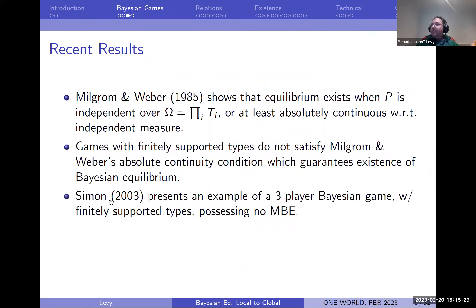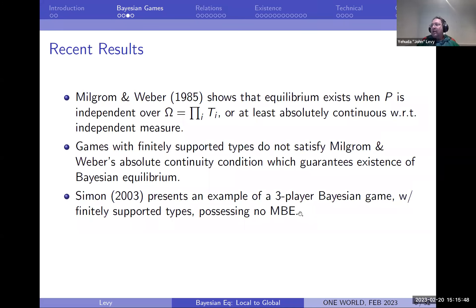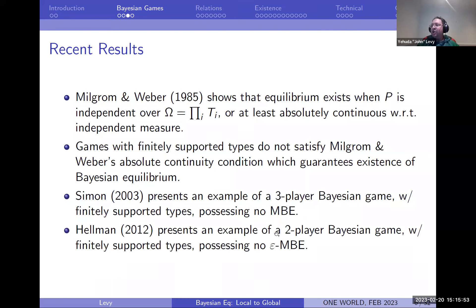Bob Simon has a three-player game with types that are finitely supported — each type has support two, so when a player learns his type he knows there are two possible states of the world, and there is no measurable Bayesian equilibrium. Zeev extends it to a sharper result: a two-player Bayesian game with finitely many supports where there isn't even an epsilon Bayesian equilibrium in the strong sense of epsilon best-replying at each type.